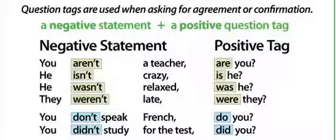He wasn't relaxed, was he? They weren't late, were they? Please notice that these four statements are all using the verb 'to be' in the present tense and the past tense. The tag question will be using the same verb — this is very important.